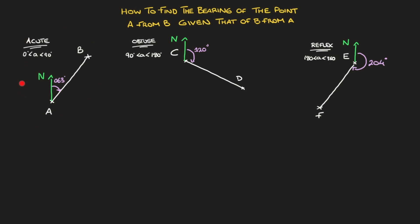In this first example, we need to find the bearing of point A from point B, and we can see that the bearing of B from A is 63 degrees. Remember, that's the angle measured clockwise from the northern line. Placing ourselves at point B, we draw the north line and label it N. The bearing of point A from point B is the angle going clockwise from north back to the line segment BA.